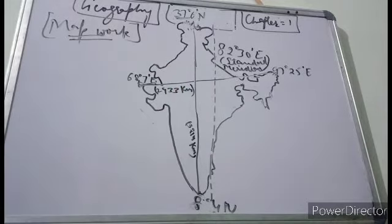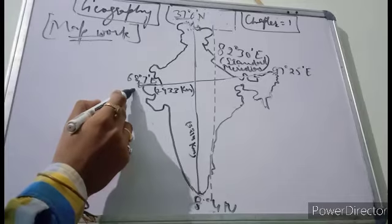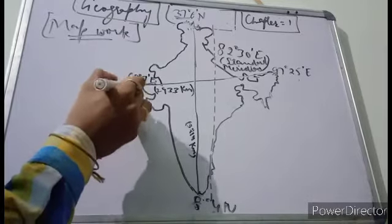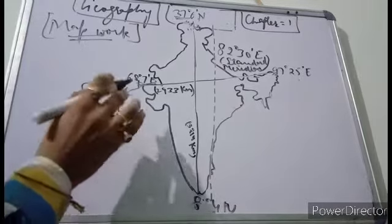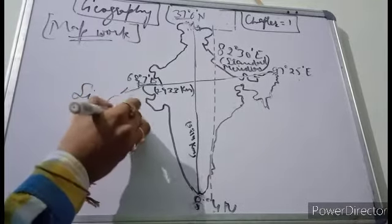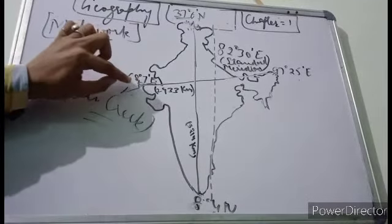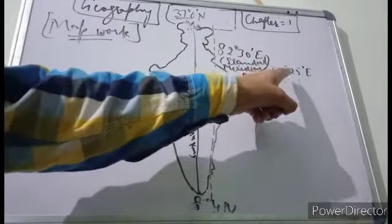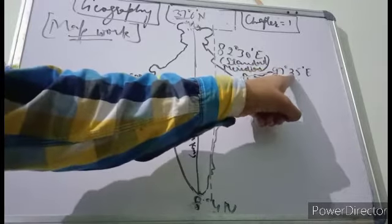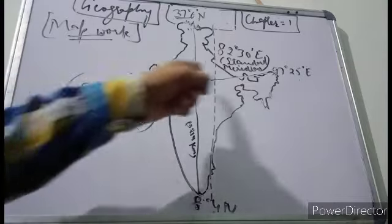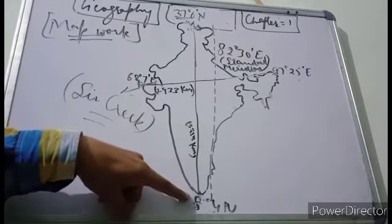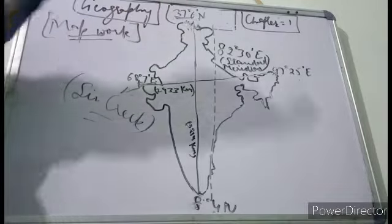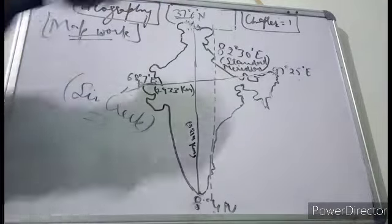Similarly, the longitudinal extent of India is from 68 degrees 7 minutes East to 97 degrees 25 minutes East. It begins from the Sir Creek region in Gujarat at 68 degrees 7 East, and ends at the tip of Arunachal Pradesh at 97 degrees 25 East. The latitudinal extent runs from Kanyakumari to the topmost part of Jammu and Kashmir, that is from 8 degrees 4 North to 37 degrees 6 North.